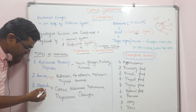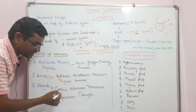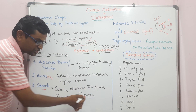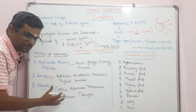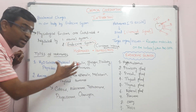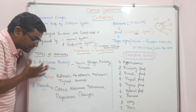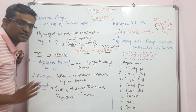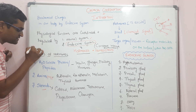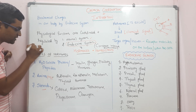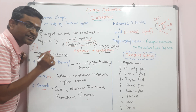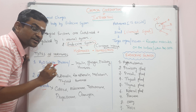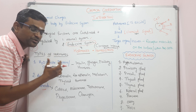The third type is steroids. Steroid hormones include cortisol, aldosterone, testosterone, progesterone, and estrogen. So all types of hormone, their chemical nature, and examples form a comparative table. This is important for matching-type questions, identifying correct or wrong statements, and both positive and negative based questions.